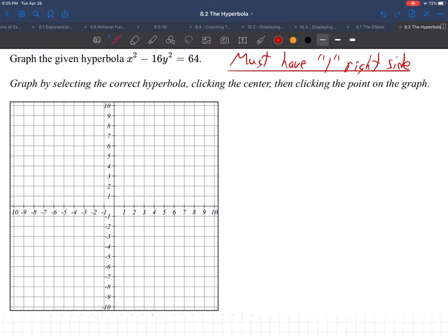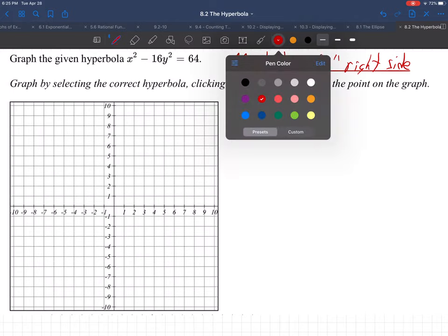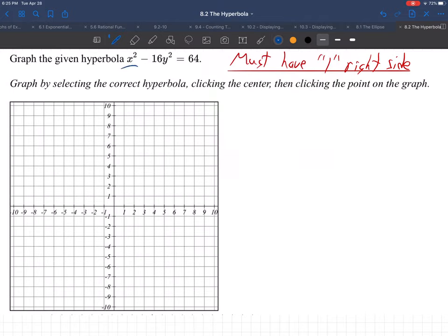Our first step then is to take what they're giving us here and to divide through by 64. We're going to divide through by 64. Why am I dividing through by 64? Because I've got to make 1 on the right side.